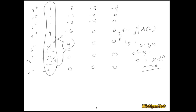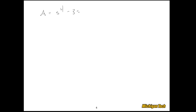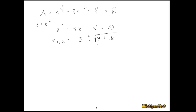The first column analysis doesn't tell us about poles on the imaginary axis, but we can sort that out by looking at the auxiliary equation A(s) = s⁴ - 3s² - 4 = 0. Let z = s², so we get z² - 3z - 4 = 0. Using the quadratic formula gives z = (3 ± 5)/2, so z₁ = 4 and z₂ = -1.